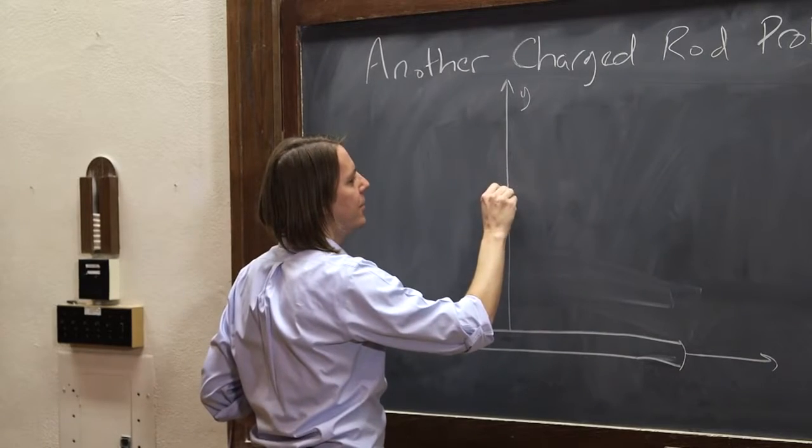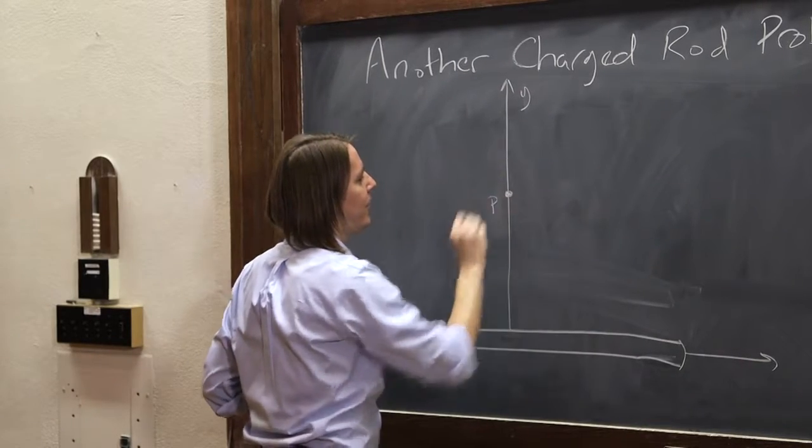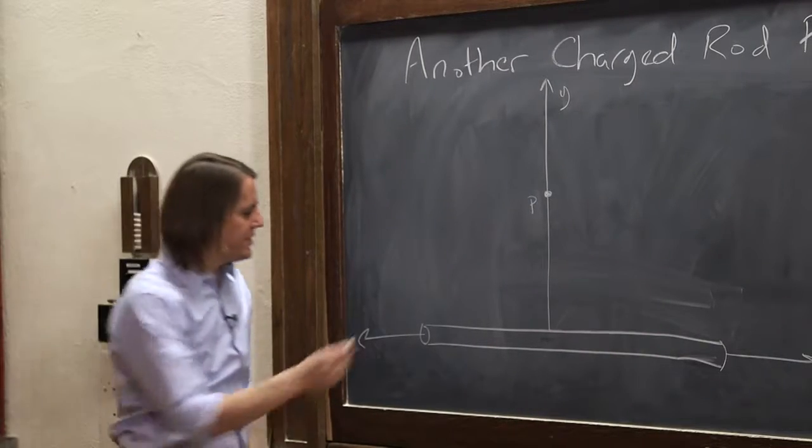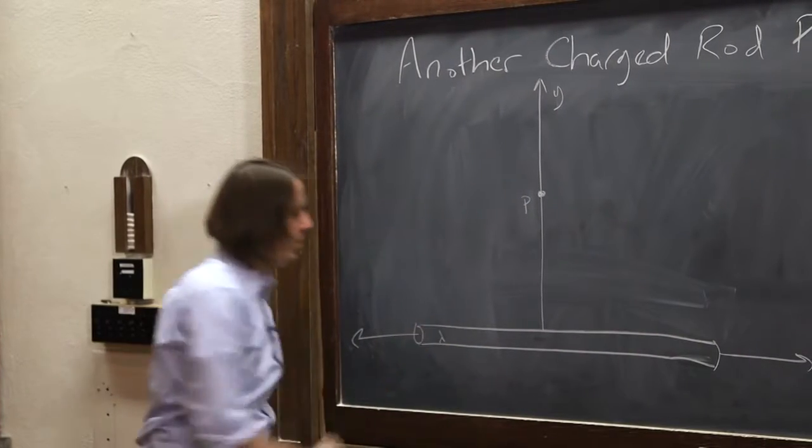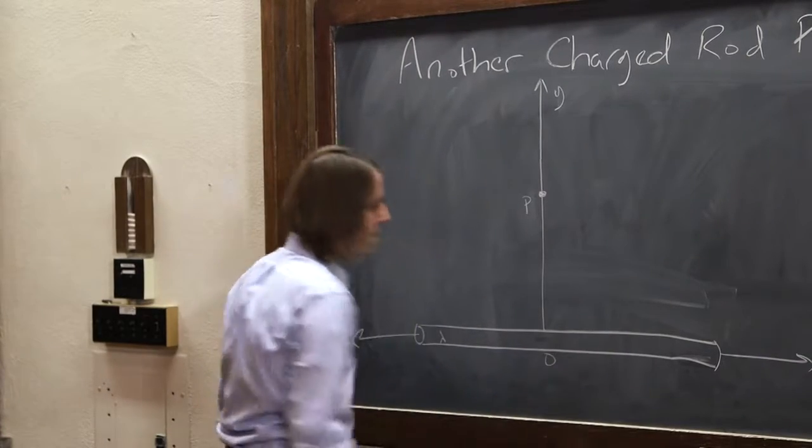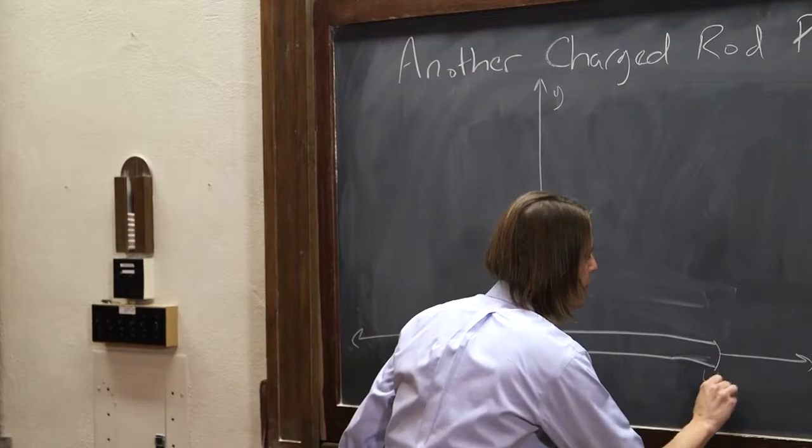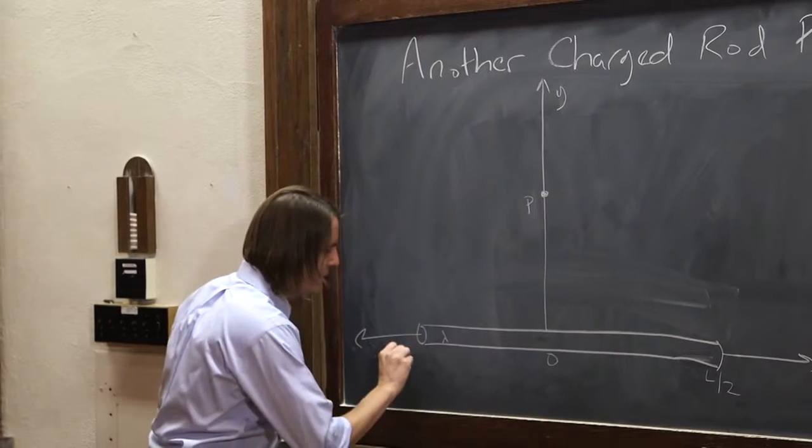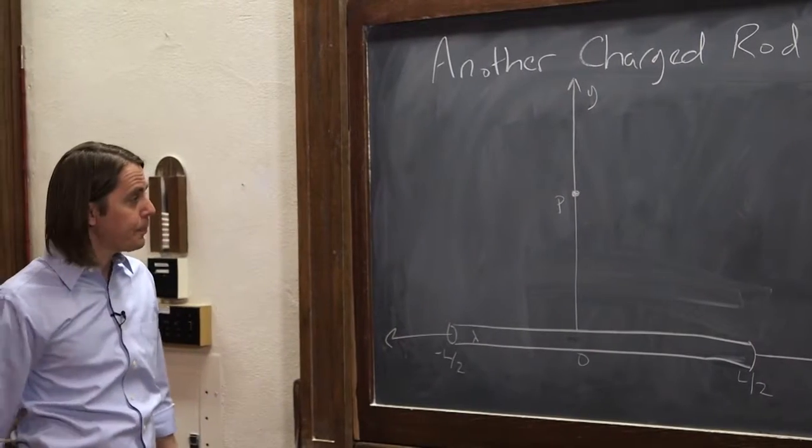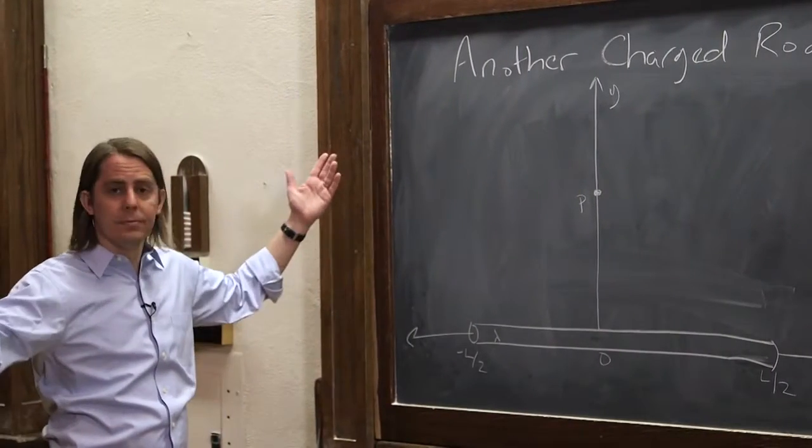And the point P is right here. That's where we want to find the electric field, to the side of the rod. The rod still has a charge density lambda and it still has a length l. We're going to make this the origin so that this end is at the point l over 2 and this end is at the point minus l over 2.